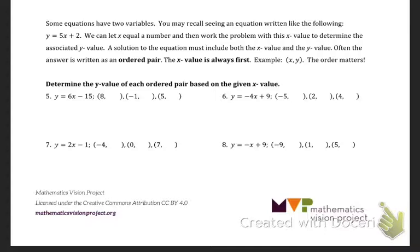So for our first one, y equals negative 4 times negative 5 plus 9. Well, negative 4 times negative 5 gives me 20. Plus 9 gives me 29. So it should be negative 5 comma 29. Second one.